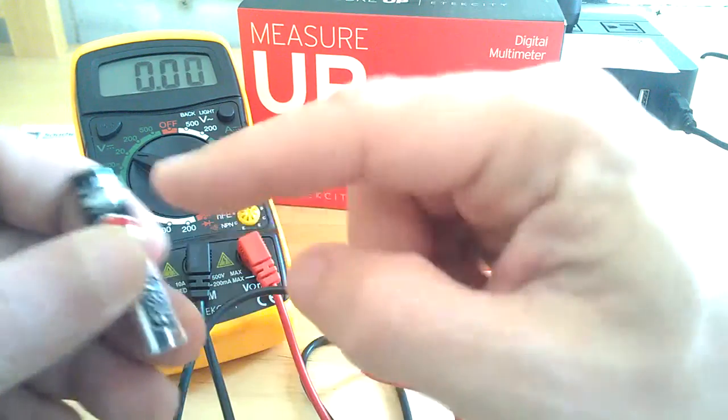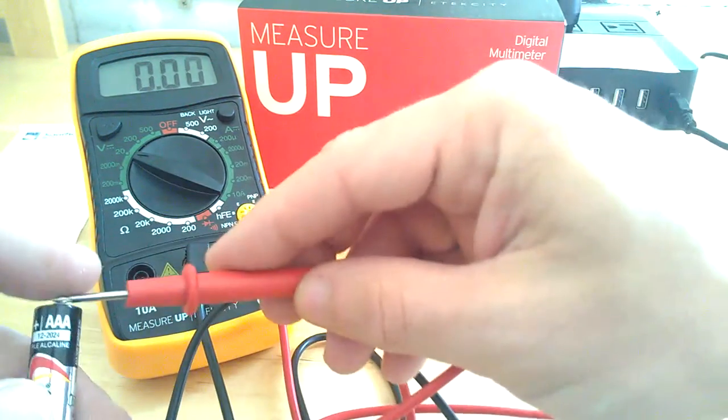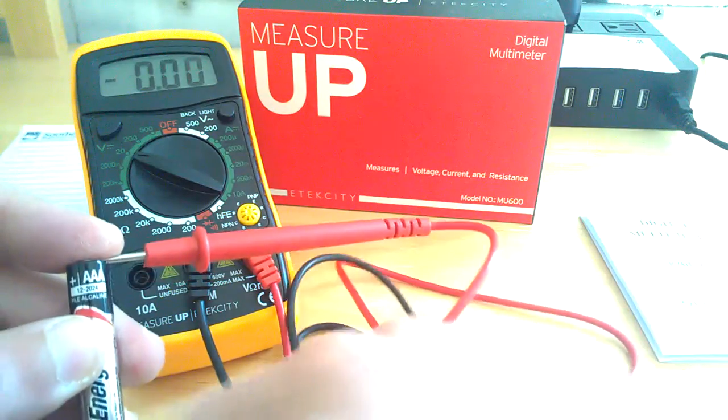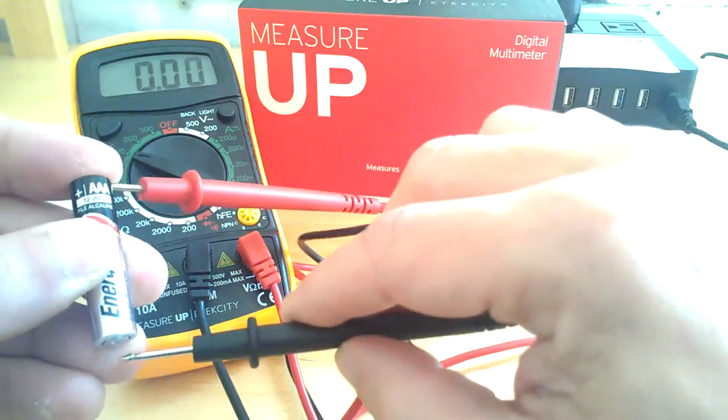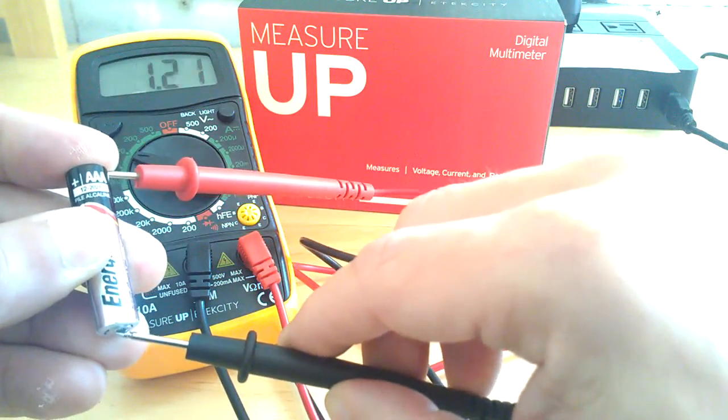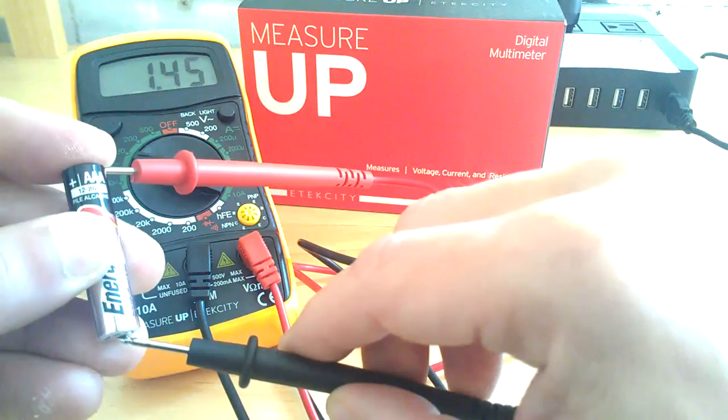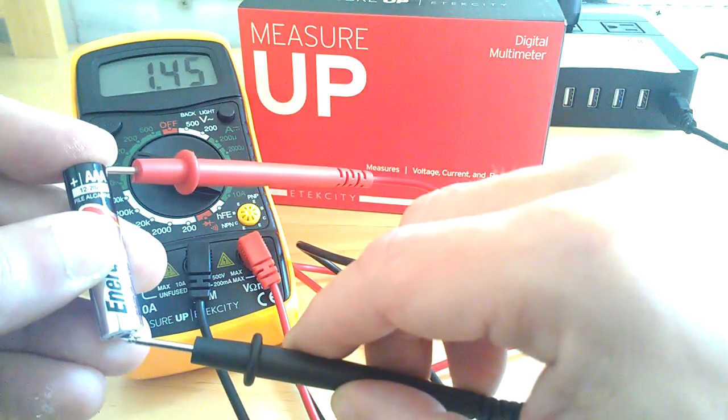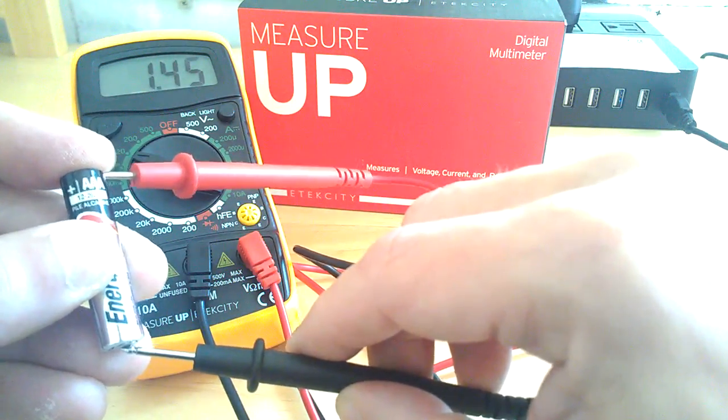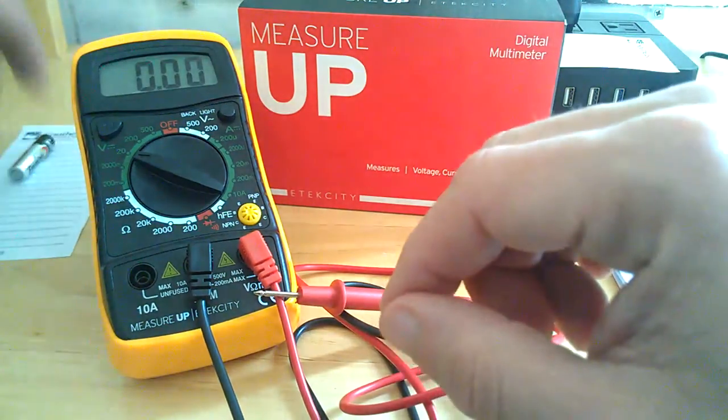Simple AAA battery here, same thing. You've got your positive marked. Put your red on that side, like you can see here, and on the bottom you put your black, and that one's dead too. Well, actually it's 1.5 volts, this alkaline battery, so I'm putting a 1.45, so it's actually really good.